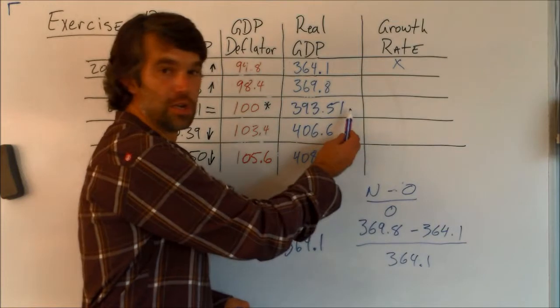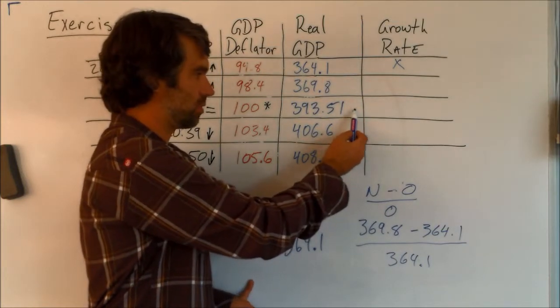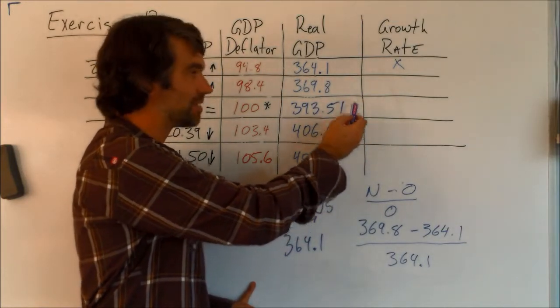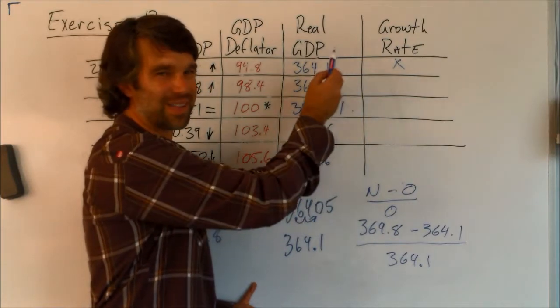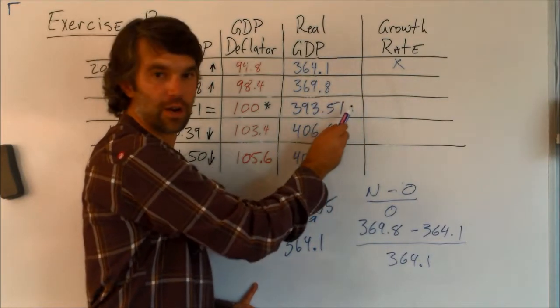Punch it into your calculator. It should be ready, and the rest will go the exact same way. Remember, with each one, we're using the new year. So when we solve for this, we're doing 393.51 minus the previous year. You don't go back to the first year. You just go to the previous year.